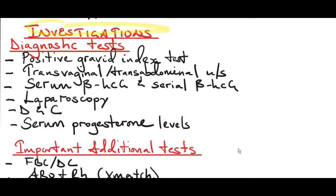Investigations in ectopic pregnancy: first, do a gravindex test, which is a urine pregnancy test. Remember these tests might come out positive or negative even when there is an ectopic pregnancy, depending on how much beta-HCG is in the body. Send the patient for ultrasound. A transvaginal ultrasound is more specific than a transabdominal ultrasound because it can detect a gestational sac as early as four and a half weeks gestational age, while a transabdominal ultrasound detects it later.